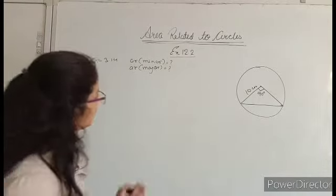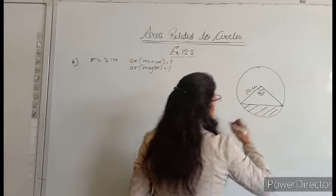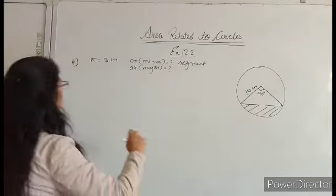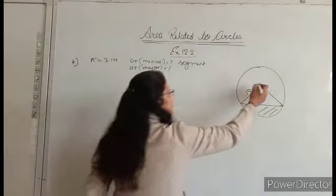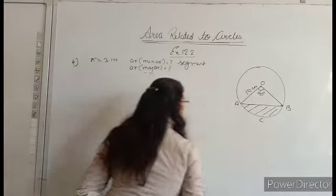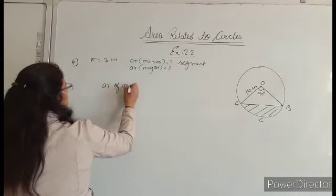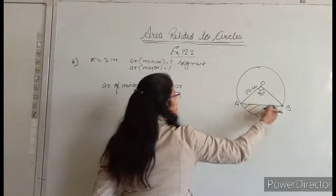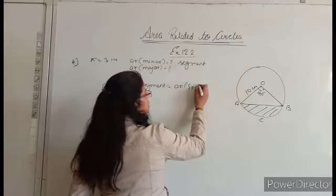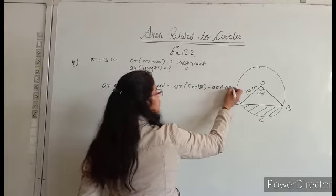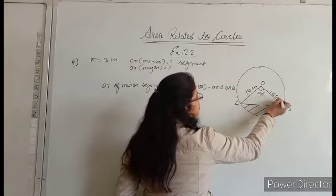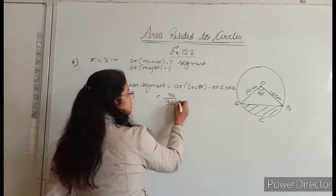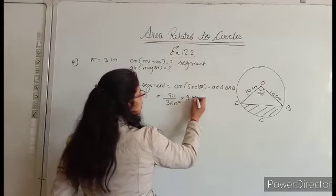We have to find the area of the minor segment. The area of segment — I told you before the starting of this exercise — is area of sector minus area of triangle OAB. So area of sector: theta upon 360 degree into pi r square. Pi is given as 3.14, radius is 10 cm.